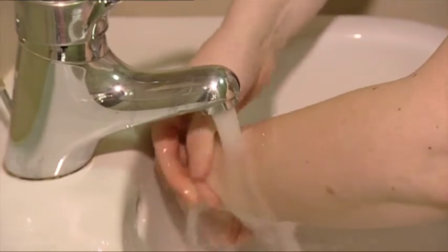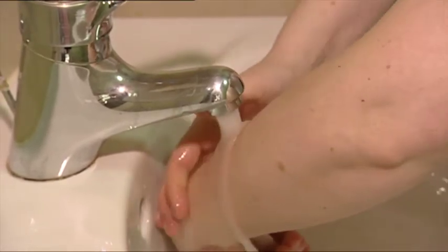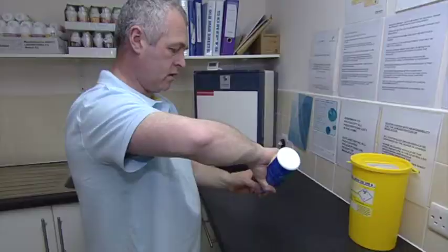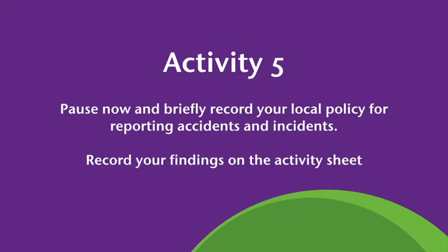Splashes from body fluids must also be dealt with immediately. PPE should be changed straight away, and splashes to the eyes or mouth should be rinsed with copious amounts of water. You should follow local policies when reporting accidents and incidents. Vaccination is another way of reducing your risk of acquiring certain infections, such as influenza and hepatitis B. Speak to your employer or occupational health department for further details. Activity 5: Pause now and briefly record your local policy for reporting accidents and incidents, then record your findings on the activity sheet.